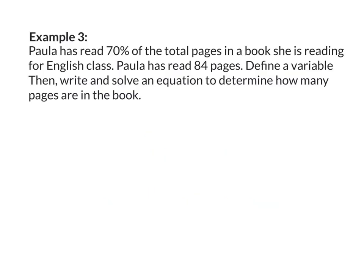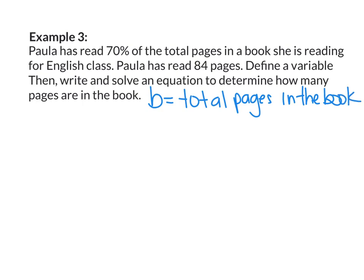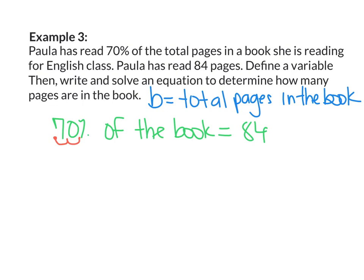Example 3. Paula has read 70% of the total pages in a book she is reading for English class. Paula has read 84 pages. Define a variable, then write and solve an equation to determine how many pages are in the book. I'm going to let B equal the total pages in the book. I know that 70% of the book equals 84, so I'm going to convert my percent to a decimal — move the decimal two places to the left. My equation is 0.7B equals 84.